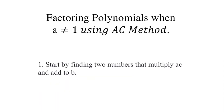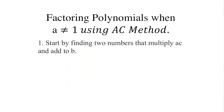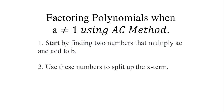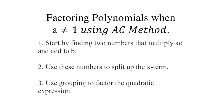Here are the steps. Start by finding two numbers that multiply AC and add to B. Use these numbers to split up the X term, which is your middle term, and use grouping to factor the quadratic expression.